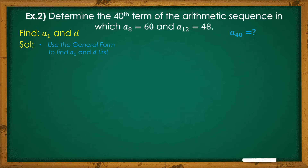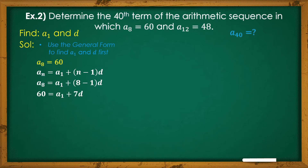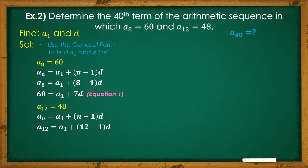For our solution, use the general form to find A sub 1 and D first. For A sub 8, where N is 8 and the 8th Term is 60, we get Equation 1: 60 equals A sub 1 plus 7D. For A sub 12, substituting N as 12 and A sub 12 as 48, and simplifying, we get Equation 2: 48 equals A sub 1 plus 11D. Using the general form with the given A sub 8 and A sub 12, we were able to set up Equations 1 and 2.